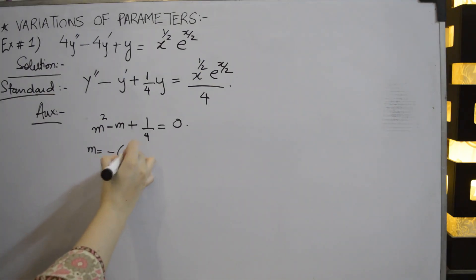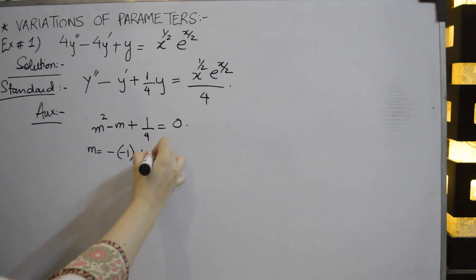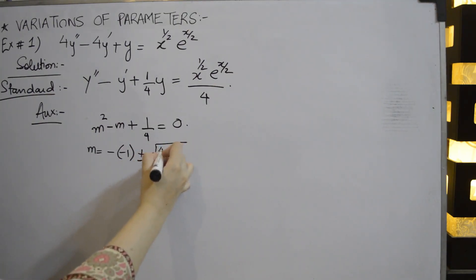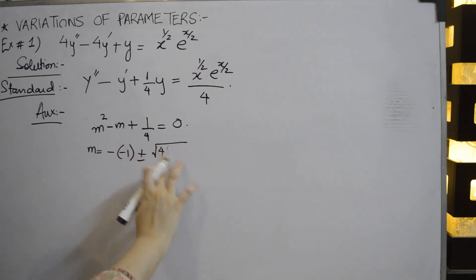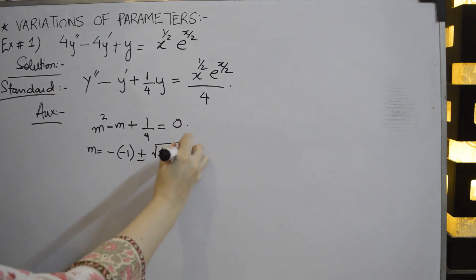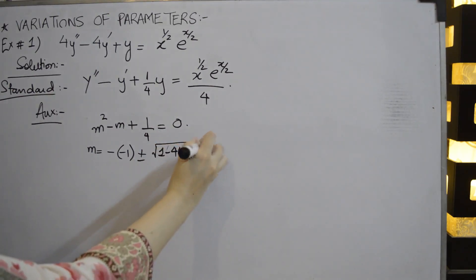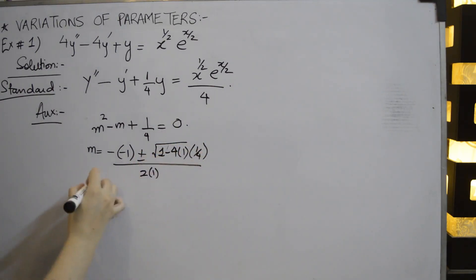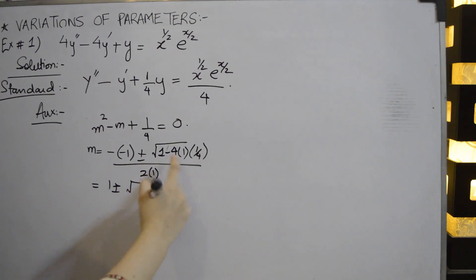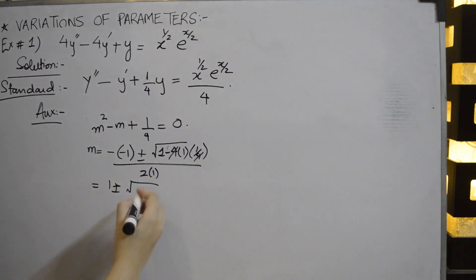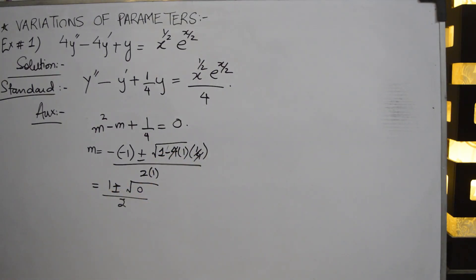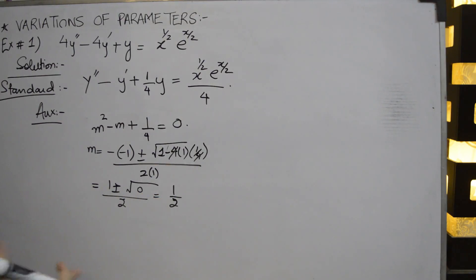Applying the quadratic formula: m = (1 ± sqrt(1 - 4*1*(1/4))) / (2*1) = (1 ± sqrt(1 - 1)) / 2 = (1 ± sqrt(0)) / 2. The discriminant is 1 - 1 = 0, so the roots are real, not complex.